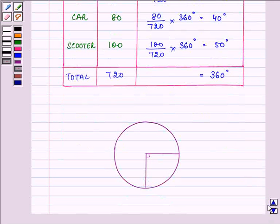So here we will write cycle and 90 degrees with it. Now 120 and so on, we will be drawing it for every single mode of transport given to us.